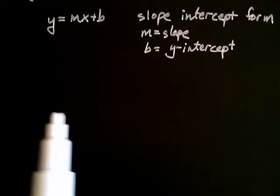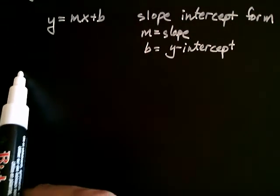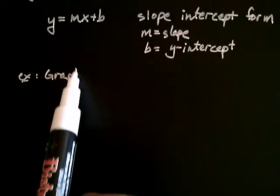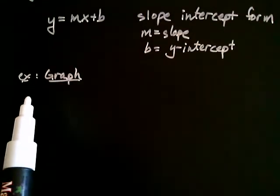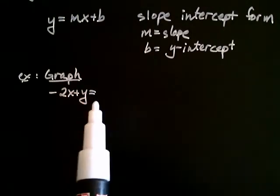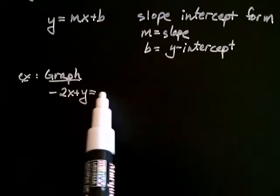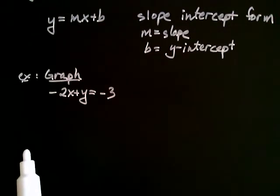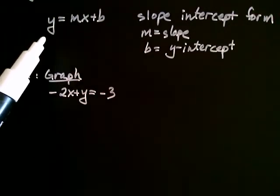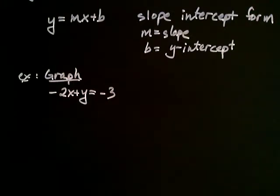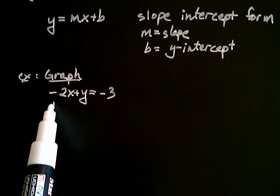Let's go ahead and do that now. Let's say that we wanted to graph negative 2x plus y is equal to negative 3. The first thing I notice is that with slope-intercept form, the y has been isolated — so that's the first thing we have to do here, is get the y by itself.